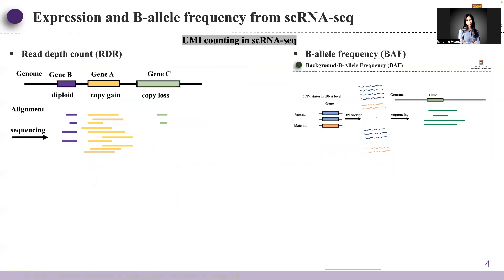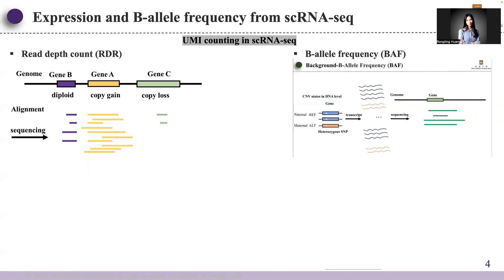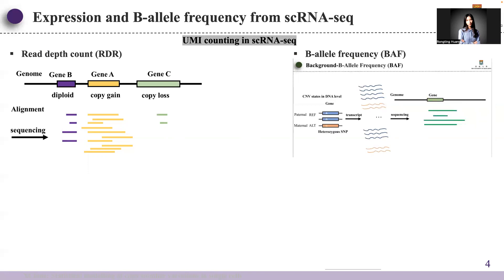It is intuitive to infer DNA copy number events from RNA-seq because gene expression can provide depth information. However, depending only on the expression profile cannot help distinguish which allele has the copy number variations. Based on the genotype, we can get B allele frequency information from UMI counting, which is helpful in calling important allele-specific mutations such as copy-neutral loss of heterozygosity in cancer. The LOH event is missed if we rely only on expression level.